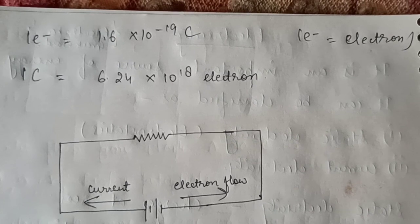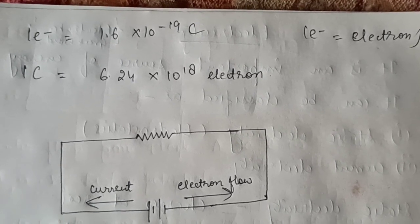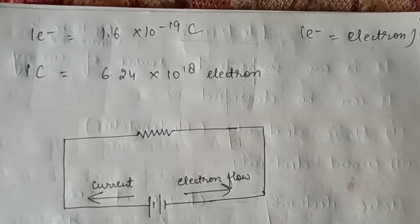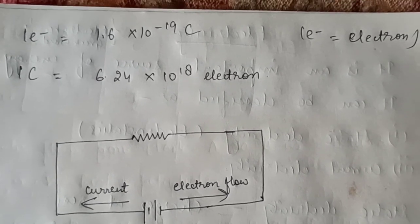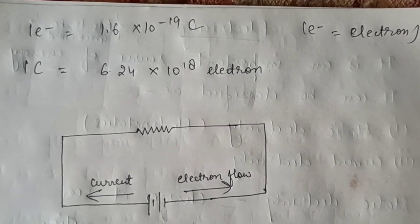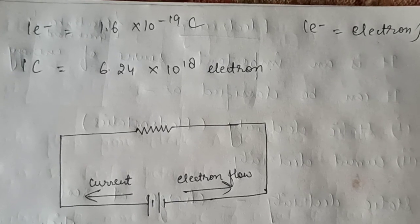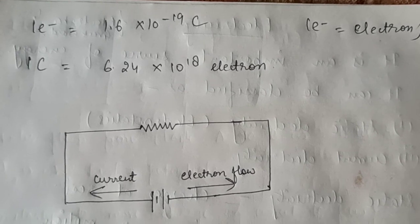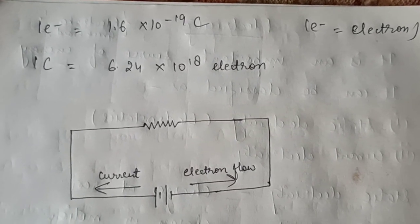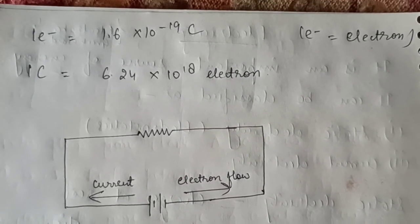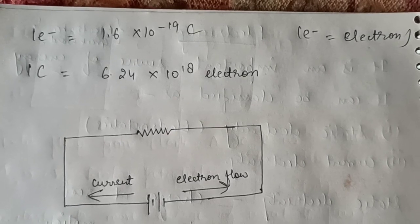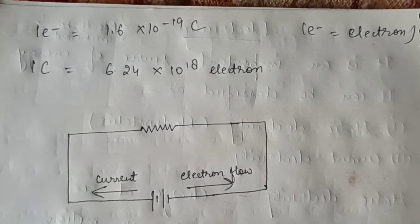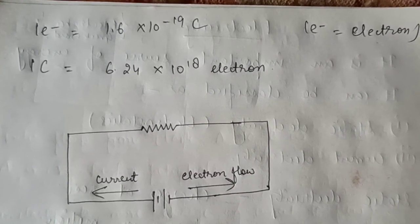If we talk about an electron, one electron is estimated to carry 1.6 × 10⁻¹⁹ coulomb. Or if we want to know how many electrons are in one coulomb, it comes to be 6.24 × 10¹⁸ electrons. Also, one proton carries 1.6 × 10⁻¹⁹ coulomb — the only difference is that in a proton it is positive and in an electron it is negative.